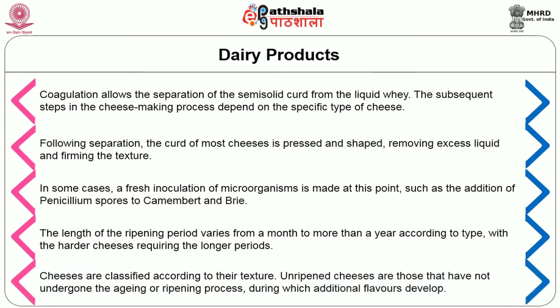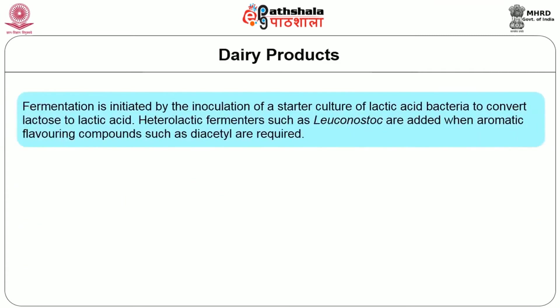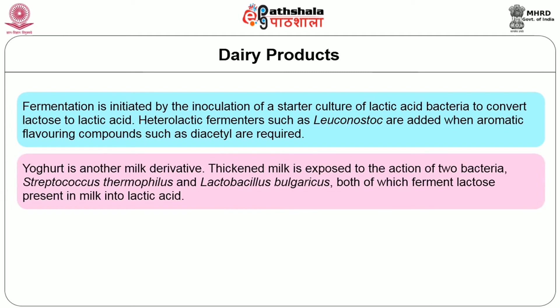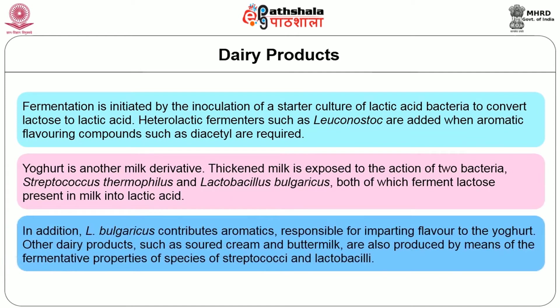Cheeses are classified according to their texture. Unripened cheeses are those that have not undergone the aging or ripening process during which additional flavors develop. Fermentation is initiated by the inoculation of a starter culture of lactic acid bacteria to convert lactose to lactic acid. Heterofermentative bacteria such as Leuconostoc are added when aromatic flavoring compounds such as diacetyl are required. Yogurt is another milk derivative. Thickened milk is exposed to the action of two bacteria, Streptococcus thermophilus and Lactobacillus bulgaricus, both of which ferment lactose present in milk into lactic acid. Additionally, Lactobacillus bulgaricus contributes aromatics responsible for imparting flavor to the yogurt.